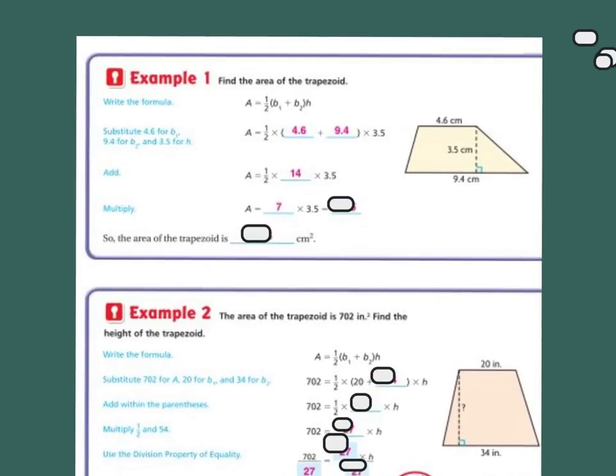Whoa, sorry. I get 7, and then 7 times 3.5 is 24.5, so 24.5 centimeters. Let's do the next one.